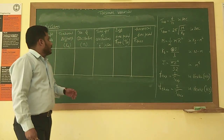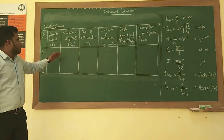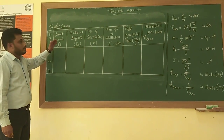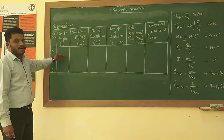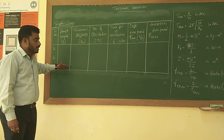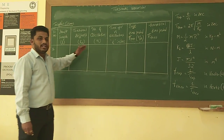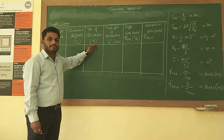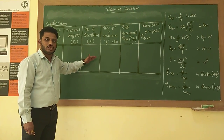For that calculation, we will be taking a shaft length, varying the shaft length, and by varying the shaft length, we will be finding the oscillations.